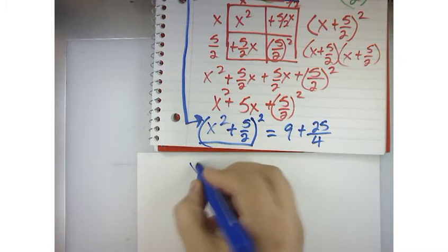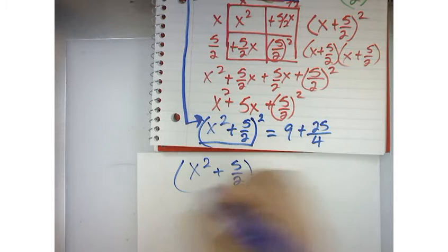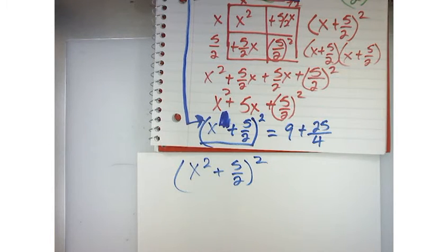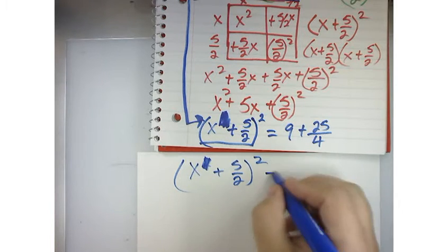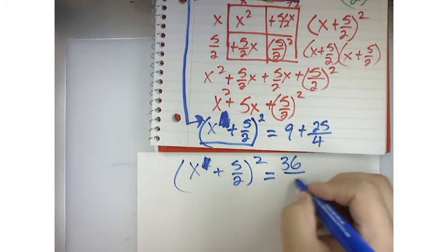I've got x plus 5 over 2, all that stuff squared. And it's not x squared, it's x. So, it's x plus 5 over 2 squared. And I suppose I could write this as 36 over 4. Isn't that the same as 9?